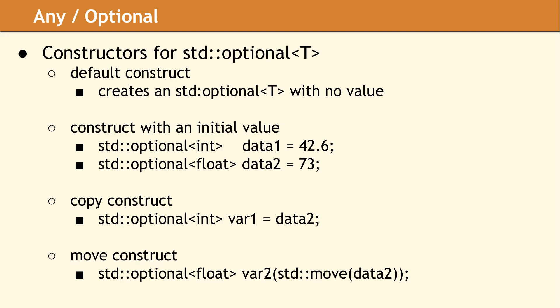Since an optional value contains a specific data type, the initial value will be converted to conform to the template parameter. Data1 will contain the integer value 42 with no fractional part. Data2 will have the value of 73.0 as a float.